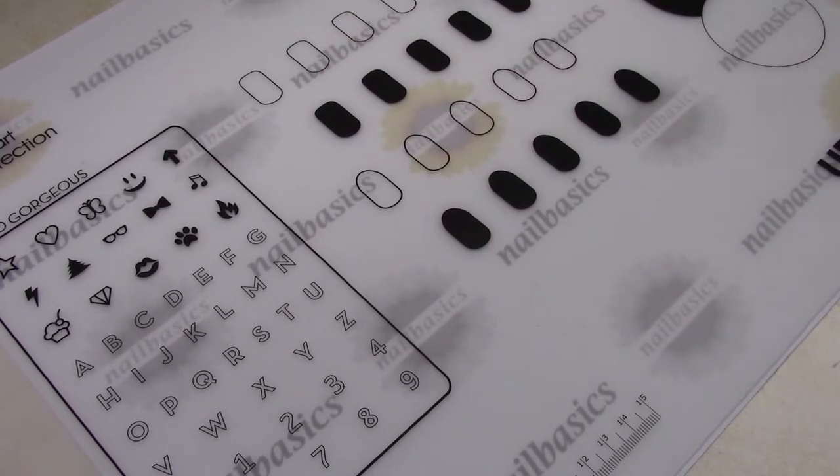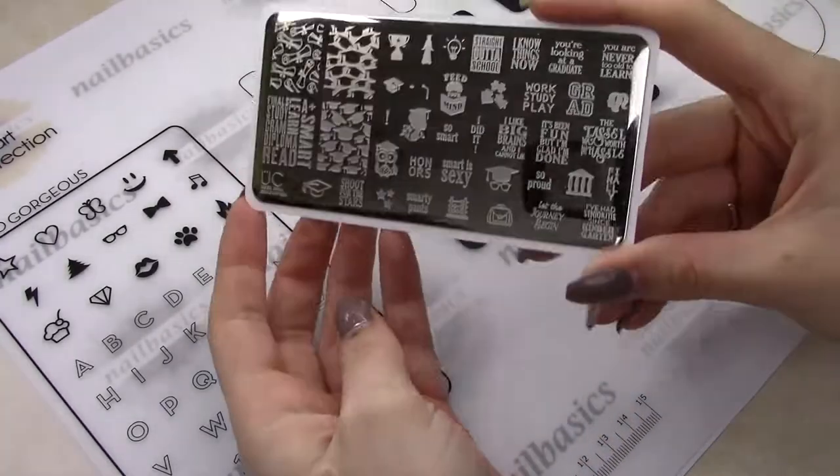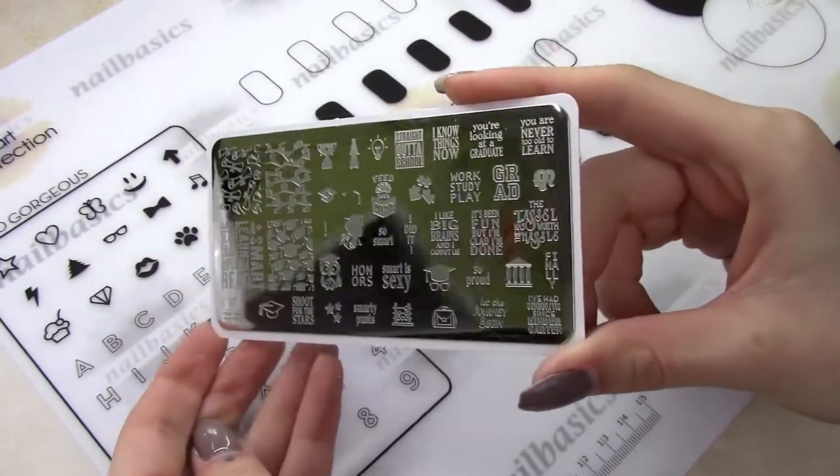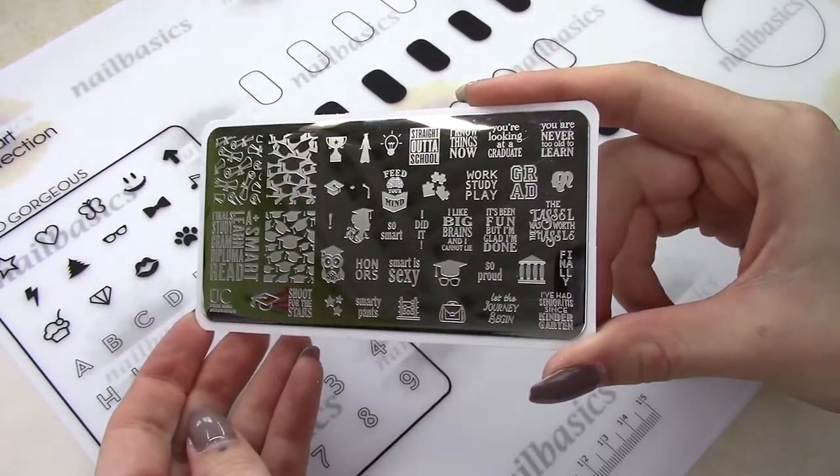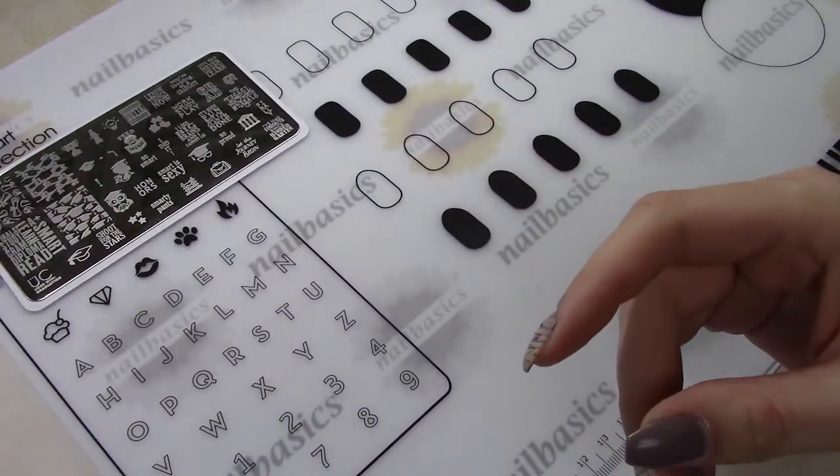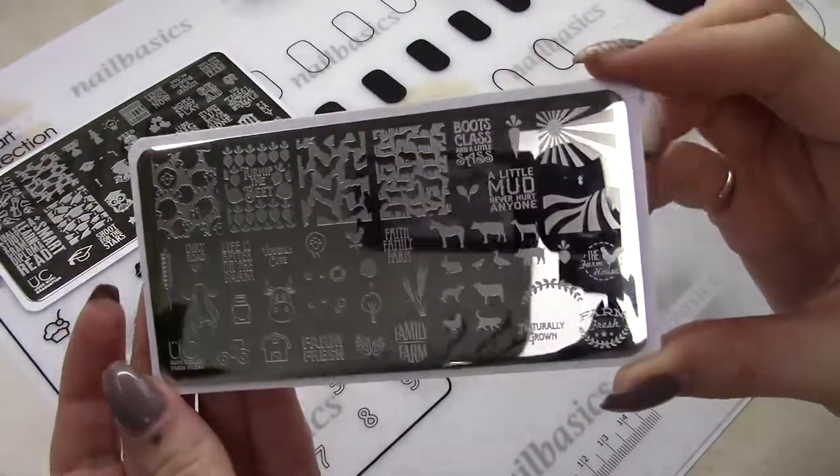But as far as their plates, they came out with two new minis, so the first one is the graduation plate, just in time for all of the grads this year. And we have the new farm fresh plate. Lots of cute little characters on there.